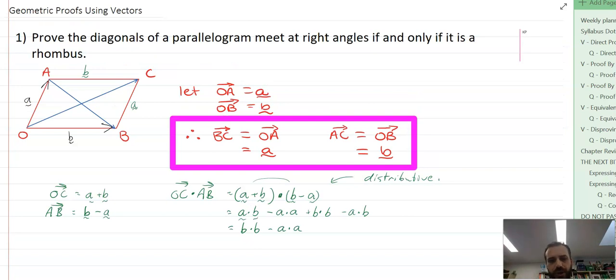So now I get this nice neat B dot B minus A dot A. If you search deep within your mind, you should remember that the dot product of a vector dot product itself, because there's zero angle between them, cos theta is just going to equal one. So now you're just doing the magnitude of B times the magnitude of B. So that's the magnitude of B squared minus the magnitude of A squared. So the dot product of OC dot AB is equal to the magnitude of B squared minus the magnitude of A squared.